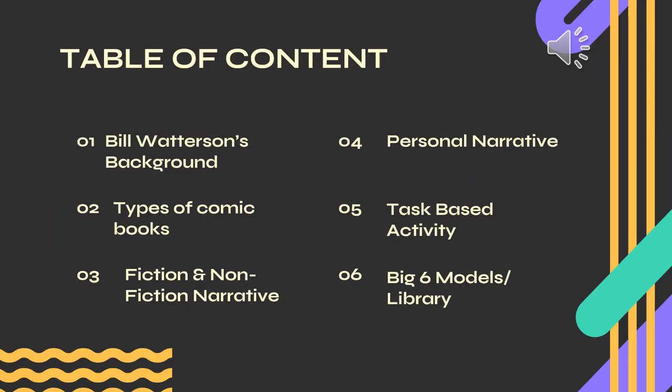Now moving on with highlighting the table of contents. First we're going to talk about Watterson's background along with his comic books, then we're going to move on to certain types of writing — fictional and non-fictional narrative — then link it to personal narrative, move on to task-based activities regarding the theme of comic books, and then briefly talk about our library class, which is about the Big Six models.